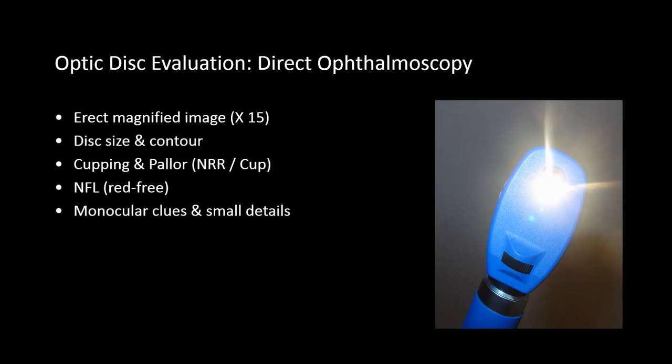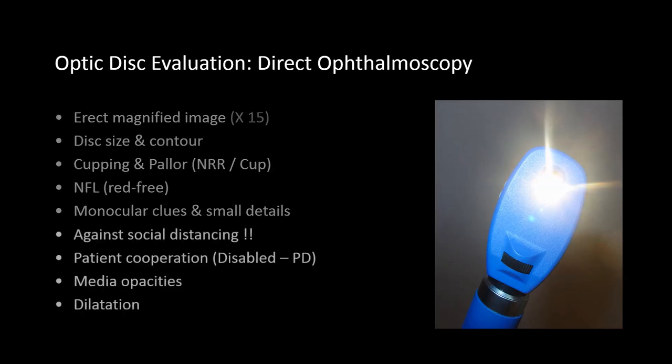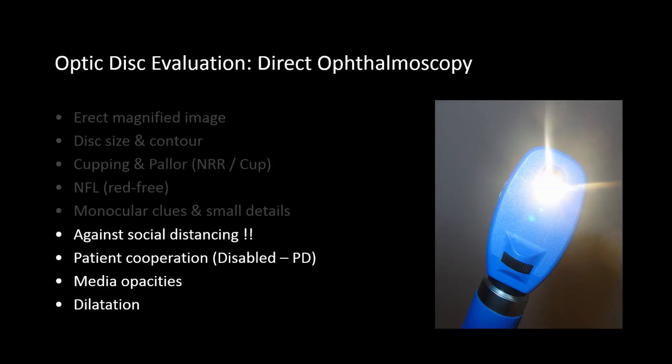By the time you have examined the optic disc, the eye may be light-adapted enough to also have a look at the macula. Using a direct ophthalmoscope to document your findings helps you remember all the small details of the optic disc and is the best way to avoid hasty or wrong diagnoses of glaucoma and other optic disc abnormalities. However, direct ophthalmoscopy may not be appropriate at times when you must keep a distance from your patients because of COVID-19, or when patients cannot cooperate, or in the presence of media opacities.